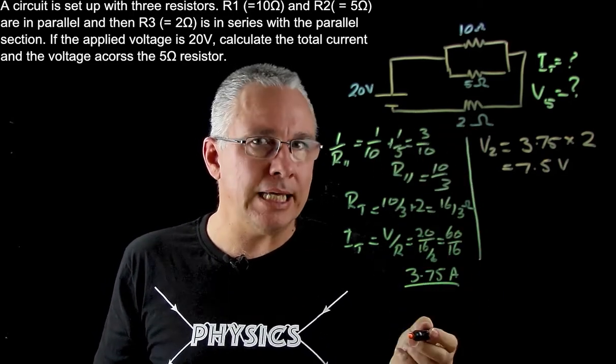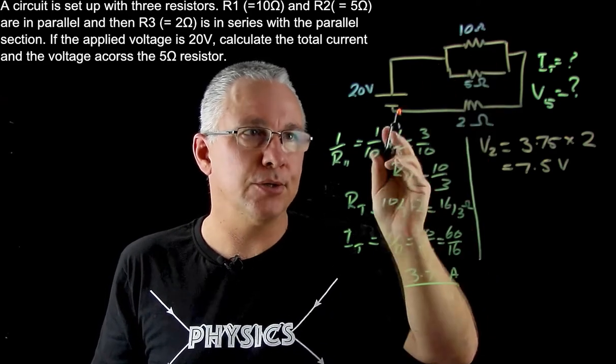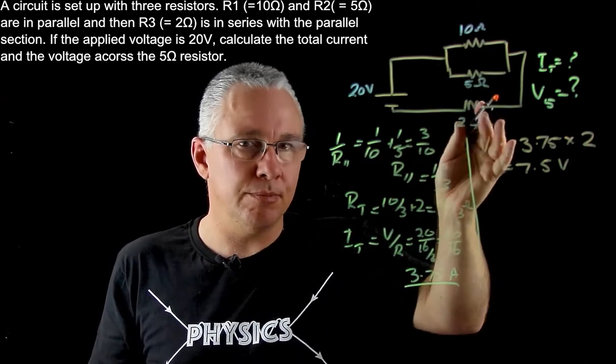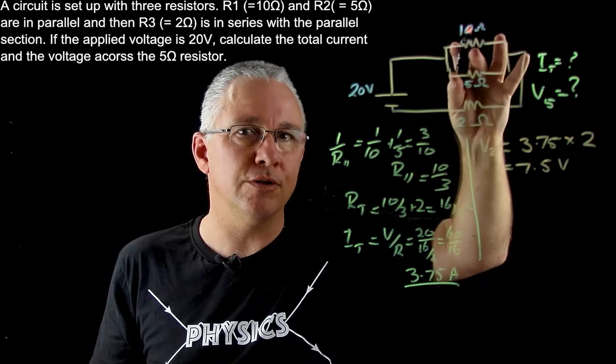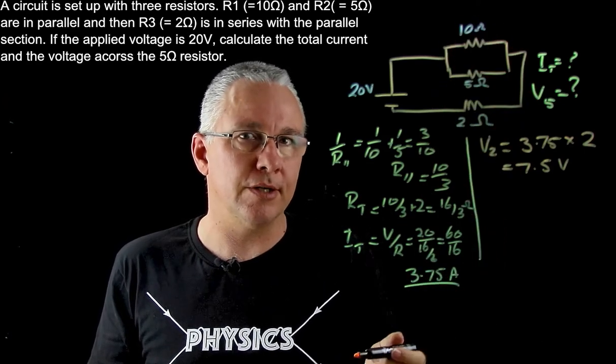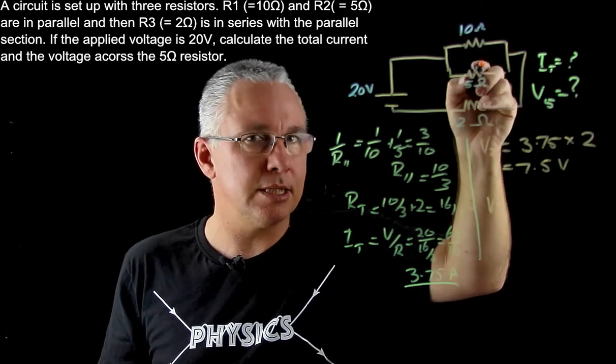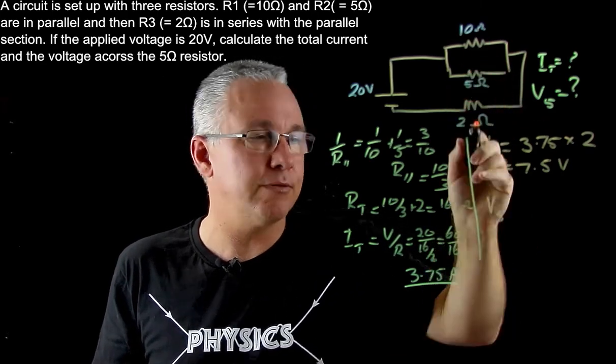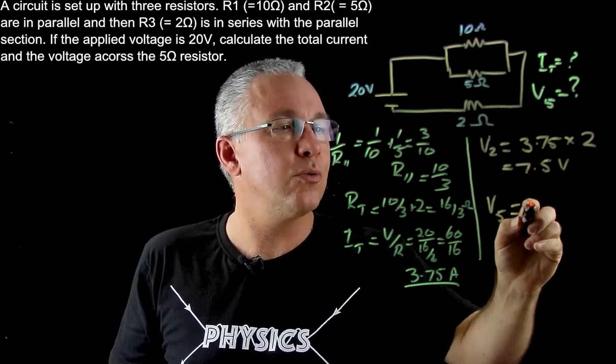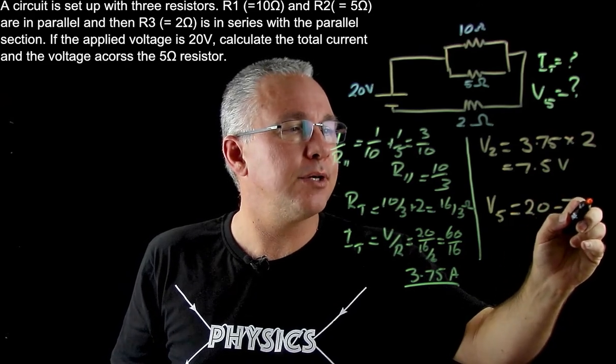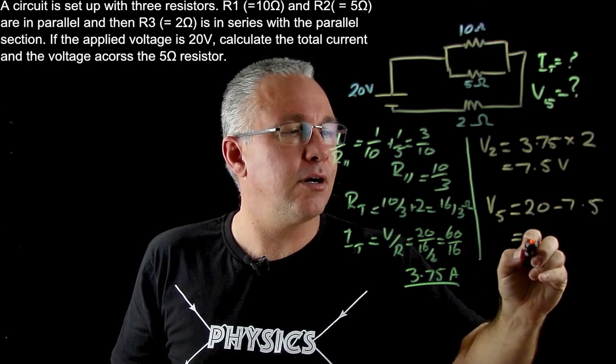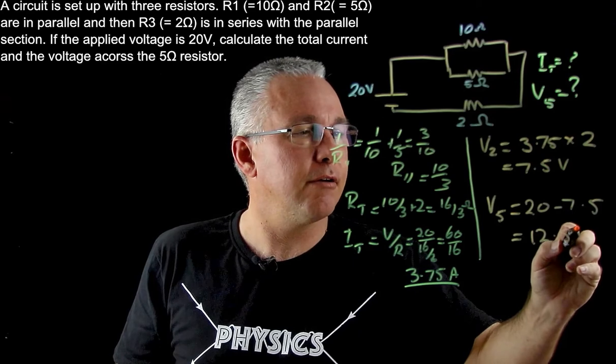The remaining voltage must drop here because voltage input has to equal the voltage drops as we go around. So as a result, the voltage across the parallel section - remember this is the same for these two resistors - is equal to 20 minus 7.5, which gives me 12.5 volts.